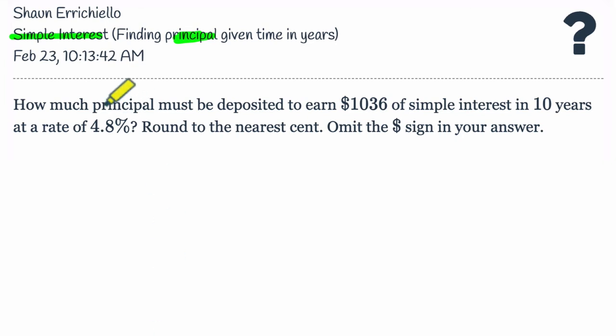Okay, so here's the question. It says, how much principle must be deposited to earn $1,036 of simple interest in 10 years at a rate of 4.8%? Round to the nearest cent and omit your dollar sign in your answer. That's just a little feature I put on there for Delta Math.